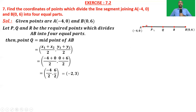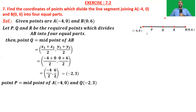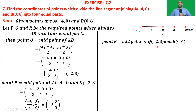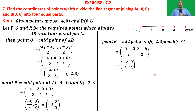Now point P is the midpoint of AQ, because AP = PQ. A equals (-4, 0) and Q equals (-2, 3), so the midpoint of AQ is (-4 - 2)/2, (0 + 3)/2, that is -6/2 comma 3/2, which equals (-3, 3/2). Similarly, point R is the midpoint of QB where Q is (-2, 3) and B is (0, 6), so R equals (-2 + 0)/2, (3 + 6)/2, that is -2/2 comma 9/2, which equals (-1, 9/2).